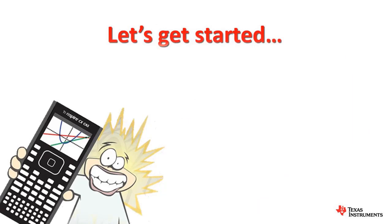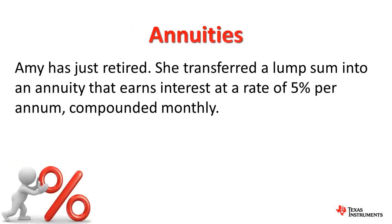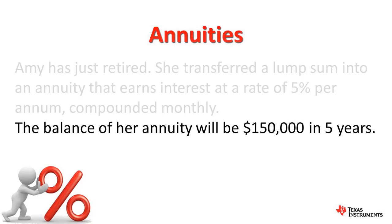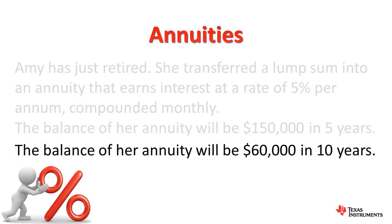This video explores a sample problem involving annuities for the recursion and financial modelling area of study in the Further Mathematics course. Amy has just retired. She transferred a lump sum into an annuity that earns interest at a rate of 5% per annum, compounded monthly. The balance of her annuity will be $150,000 in 5 years and $60,000 in 10 years.